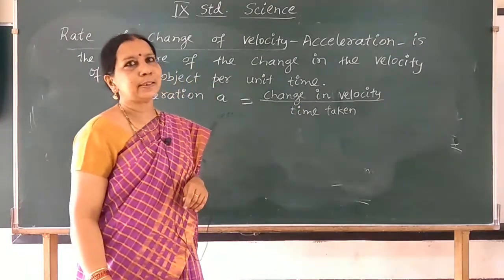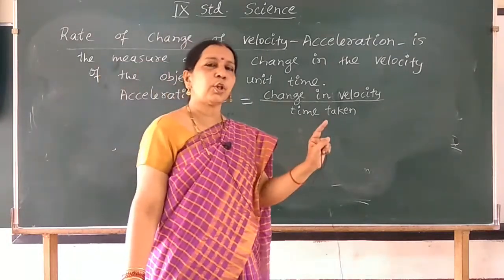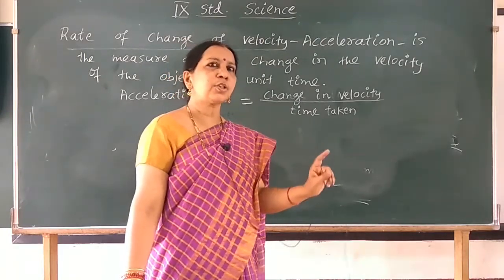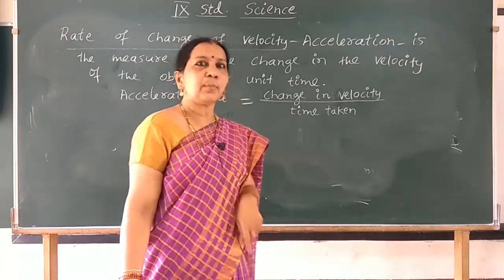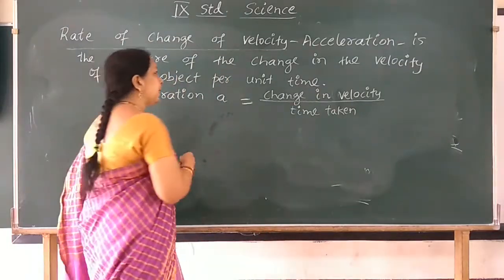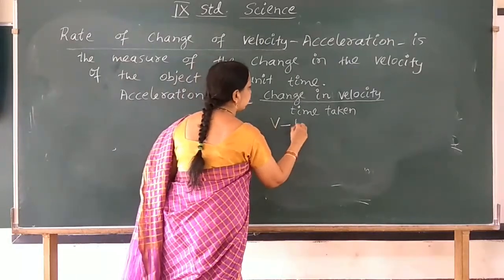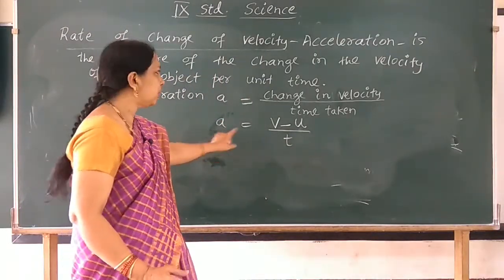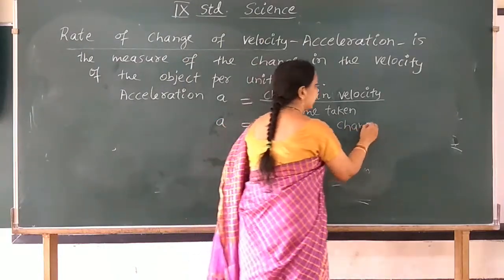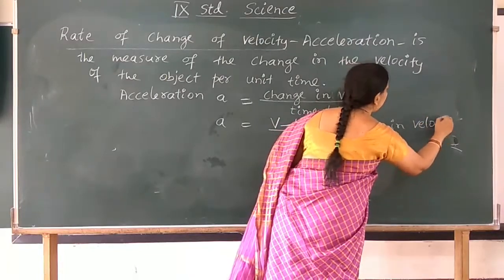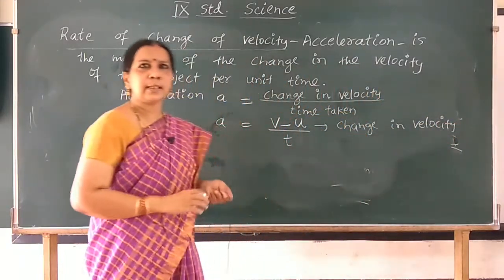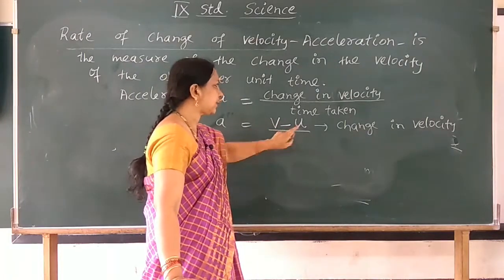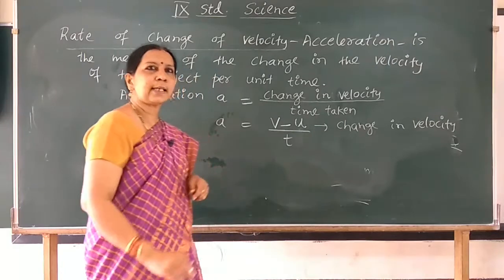What is change in velocity? Velocity of an object changes from initial velocity U to final velocity V. So the change in velocity is V minus U. Therefore the expression for acceleration is: A equals (V minus U) divided by T. V minus U is the change in velocity divided by time T. This is the expression for acceleration.